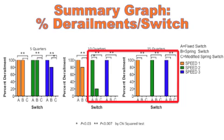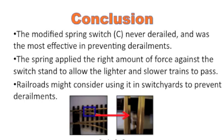Switch C derailed the train the least. This indicates that if it was used on real railroads, it could help them prevent derailments.